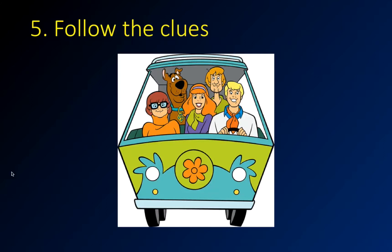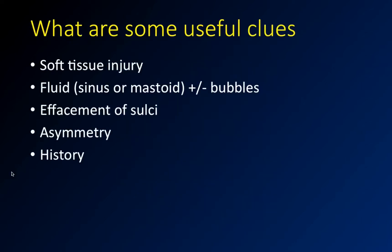This applies to everything. I have the mystery machine and the Scooby-Doo gang here — the principle is to follow the clues. Like on an image, you'll have some clues. On a chest image there was soft tissue swelling of the chest wall and I should have looked at the clavicle. What kinds of clues are there in neuroradiology? Soft tissue injury, and we've already talked about fluid.